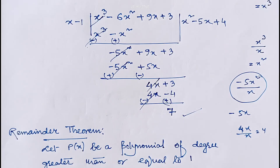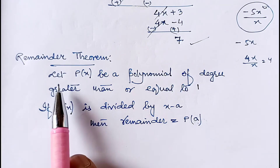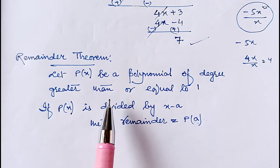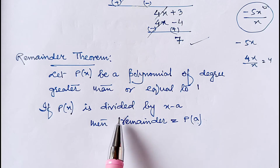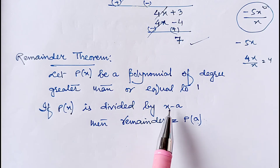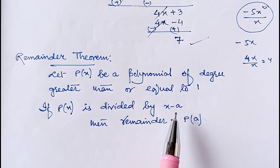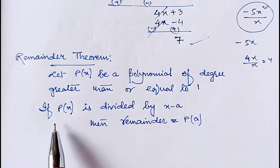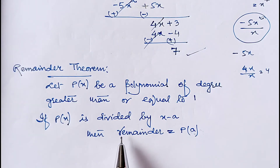After long division we got remainder 7. The same remainder can be calculated using a theorem called the remainder theorem. According to the remainder theorem, suppose p(x) is a polynomial of degree greater than or equal to 1. If this polynomial p(x) is divided by x - a, then the remainder will be p(a).